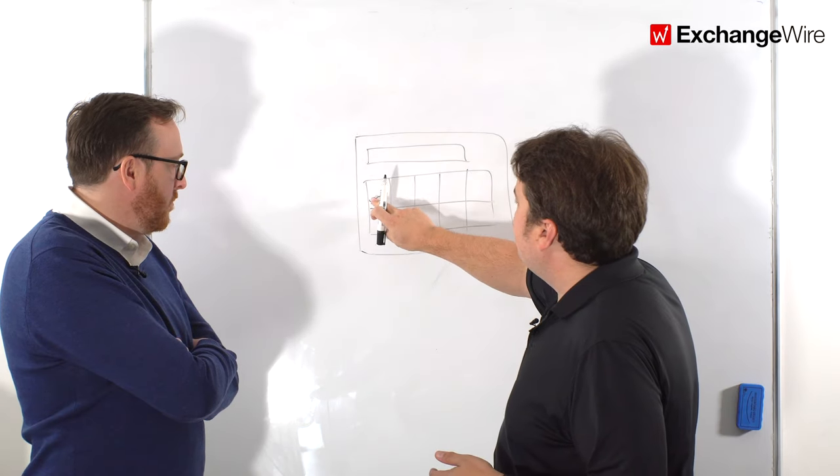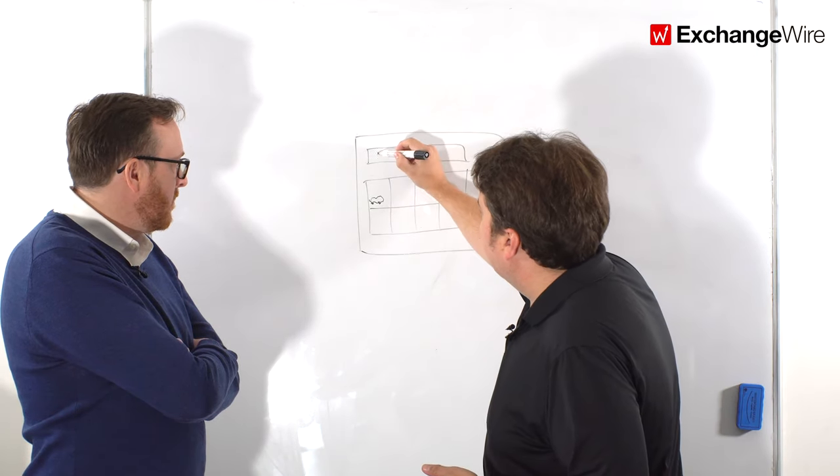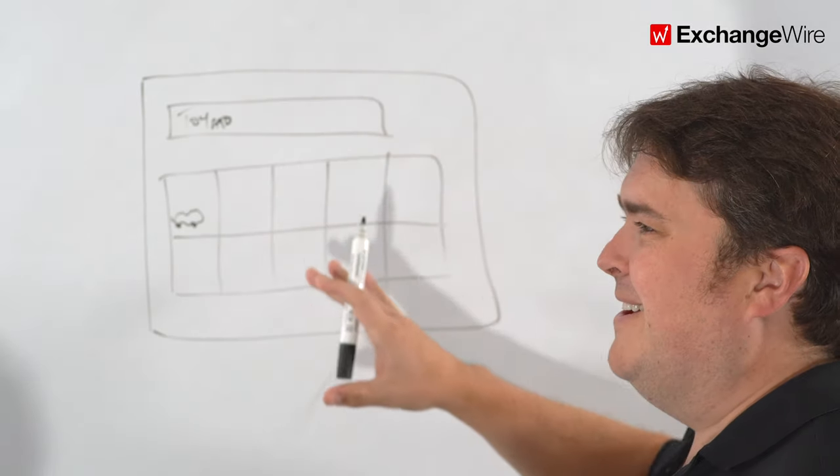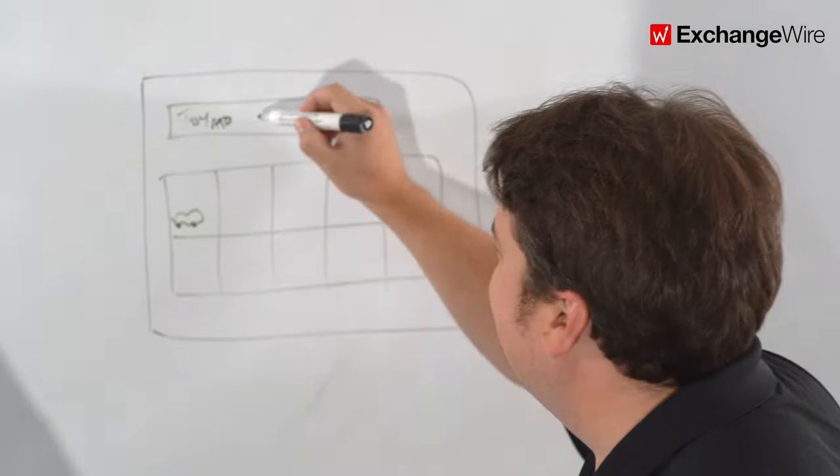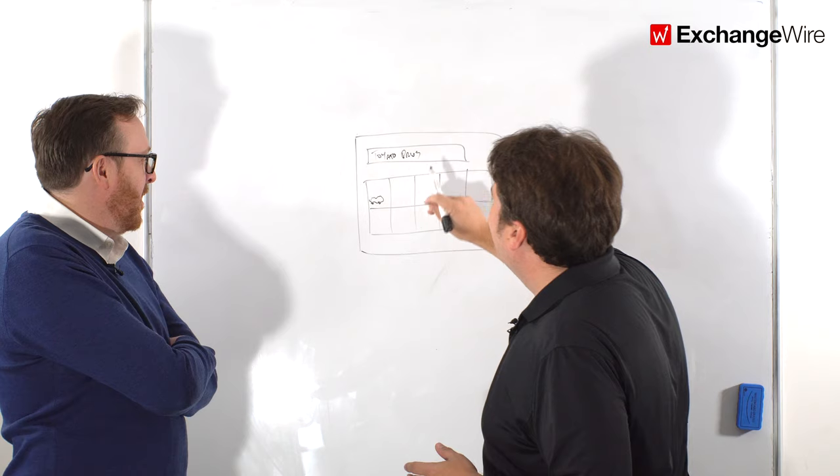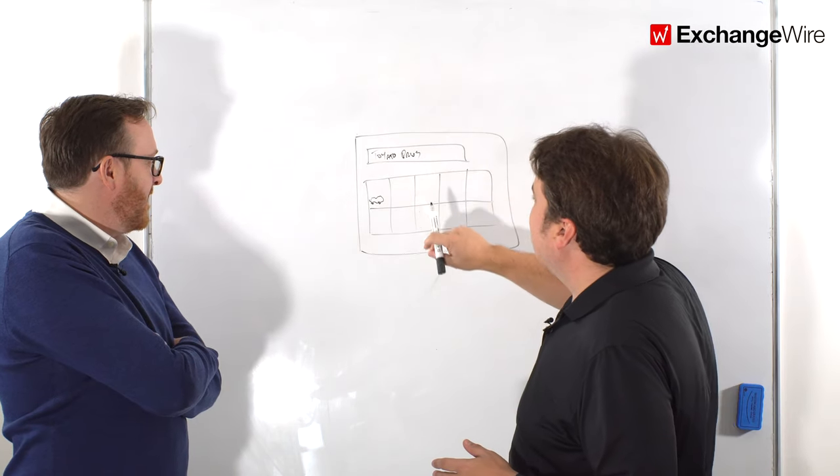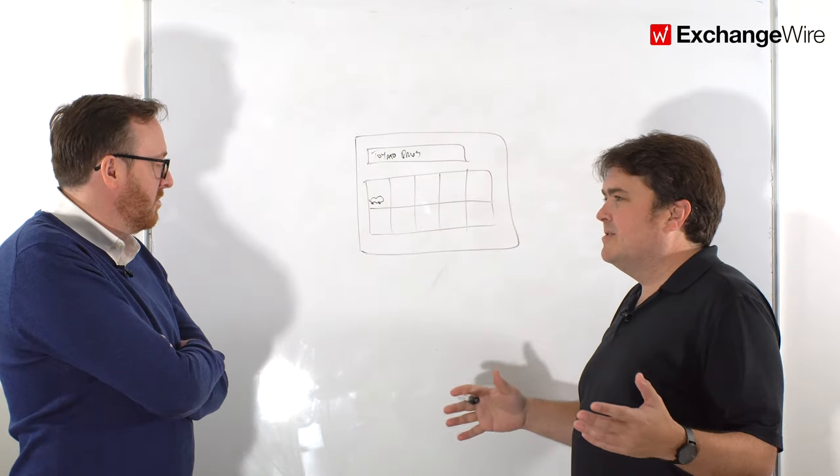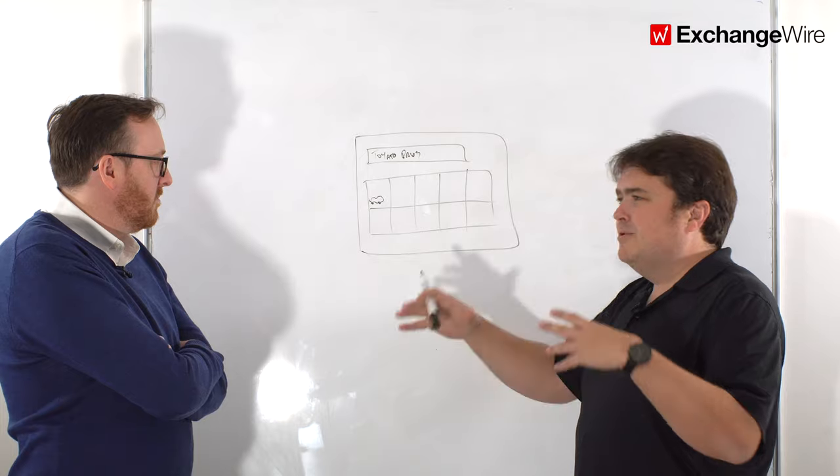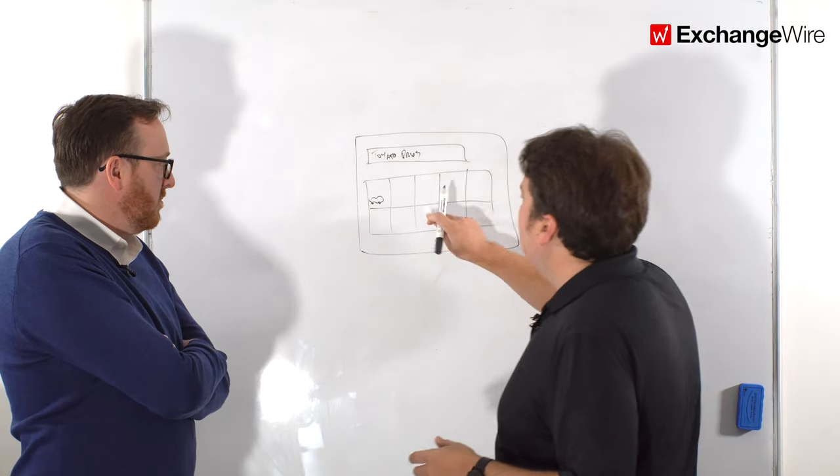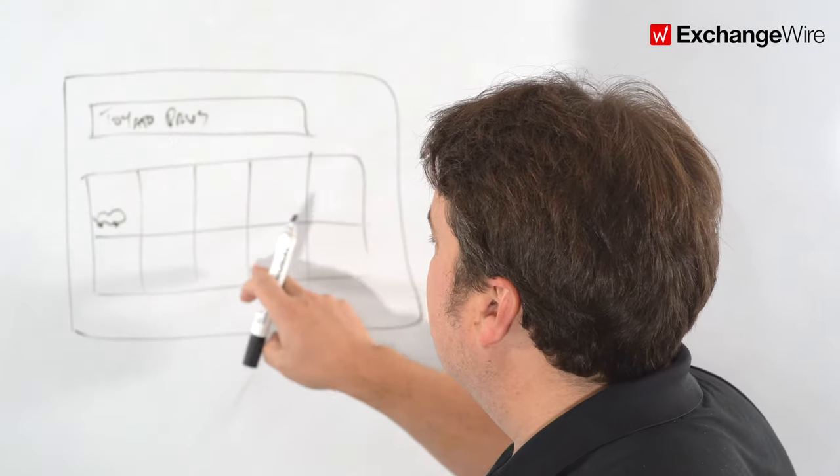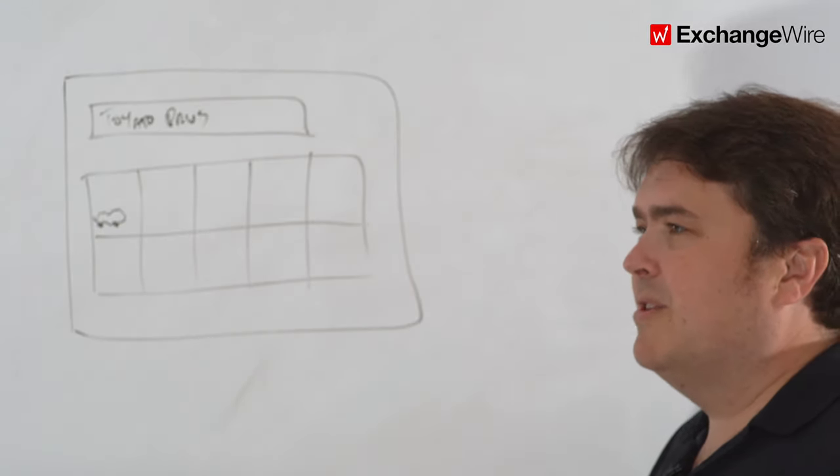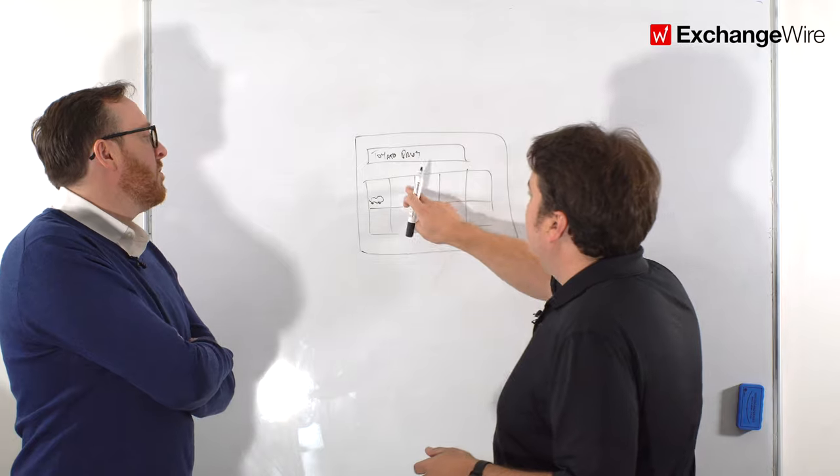Then you're going to have search results and they kind of look like these cards. And so each of these individual cards is a car. I'm going to draw a car here. There we go. It's a great car. So each of these tiles is a car. And so this is like a perfect opportunity for a really high impact native ad.